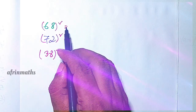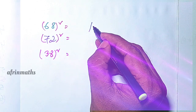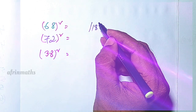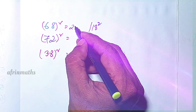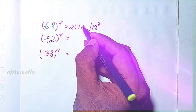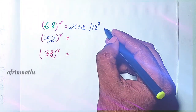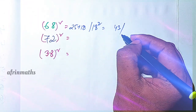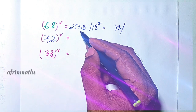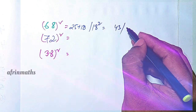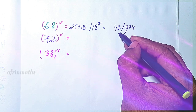Now 68 squared — it is 18 away from 50. 25 plus 18 is 43, and 18 squared is 324. The 3 carries over, making the left part 43 plus 3 equals 46. So the answer is 4624.